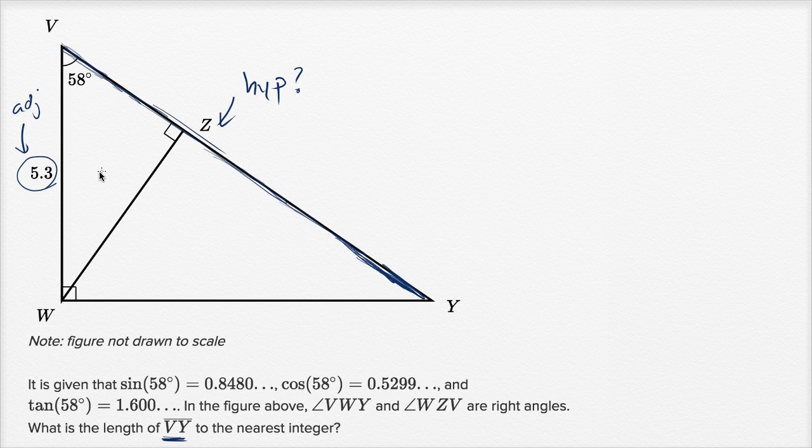So which trig function deals with adjacent and hypotenuse? Well, we could go to the SOHCAHTOA definition of our trig functions. Sine is opposite over hypotenuse, cosine is adjacent over hypotenuse, and tangent is opposite over adjacent. So we're dealing with the adjacent which we know, and we need to figure out what the hypotenuse is. So we should think about using cosine.